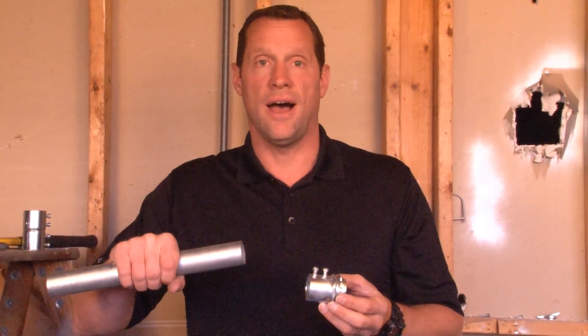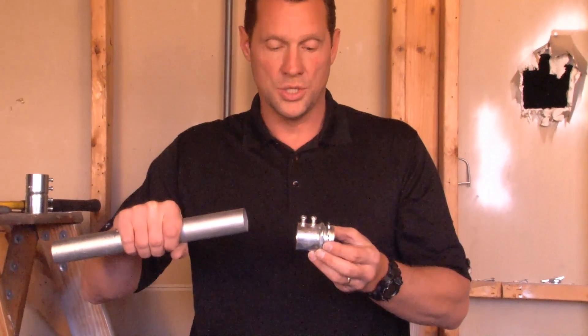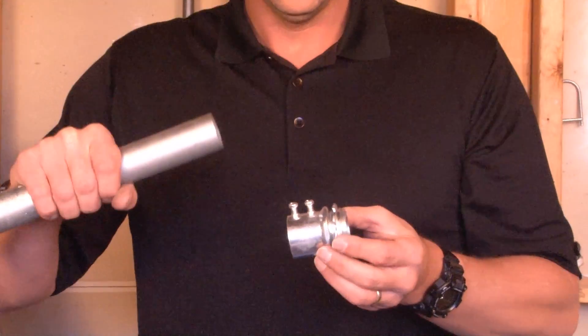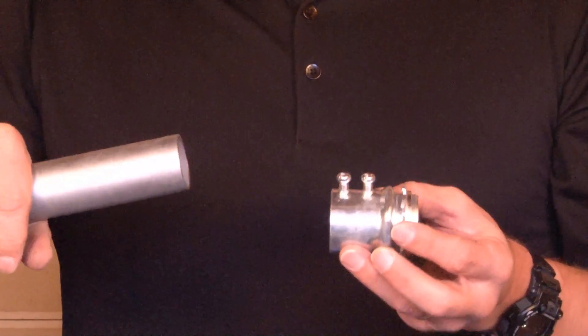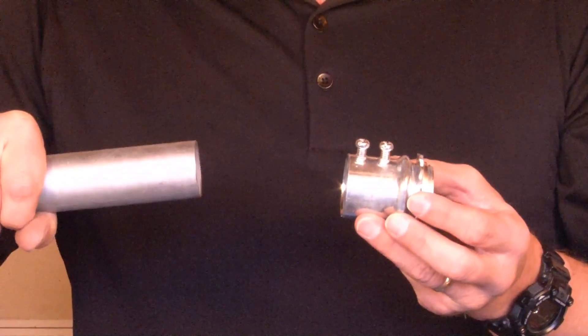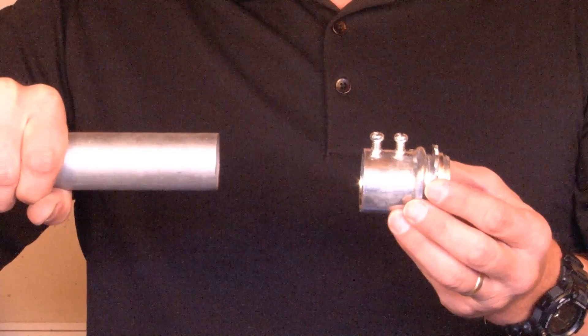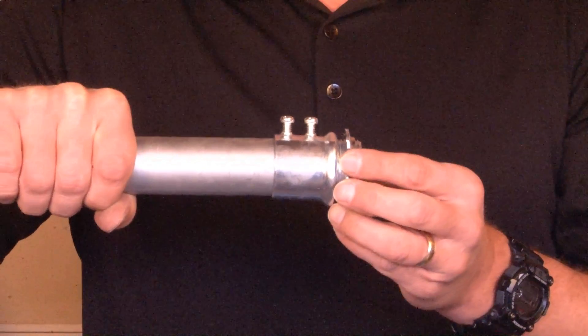Part number SSCN125 is a one and one quarter inch set screw connector that has a built-in lock nut. The way you install this product is you simply take your one and a quarter inch cut piece of conduit and slide it directly into the connector.